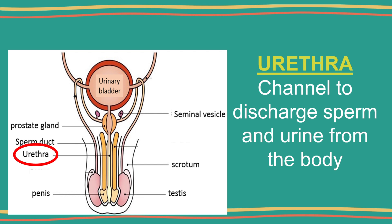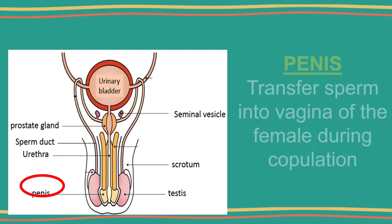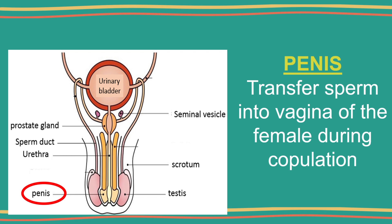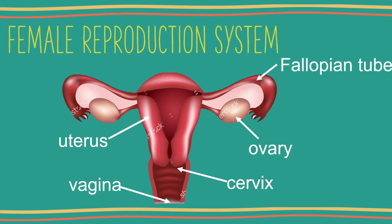The urethra is a tube which transports semen and urine out of the body at different times. The penis is an organ which releases sperms into the vagina of the female during copulation.